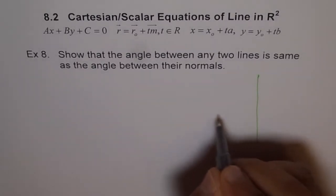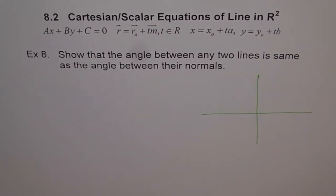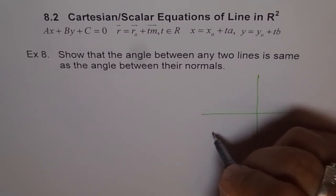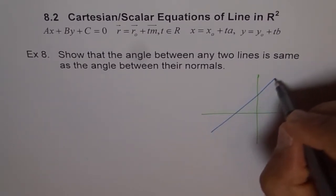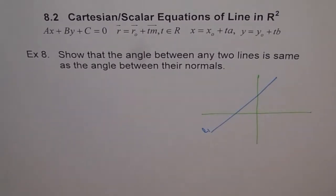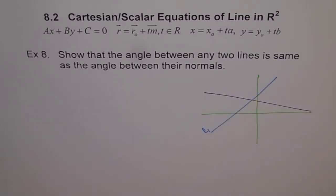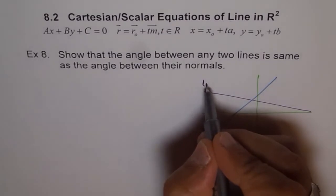Here is our coordinate plane. Let's draw two lines here. Let's say this is our line number 1. And then let me have another line — let's call it line number 2.